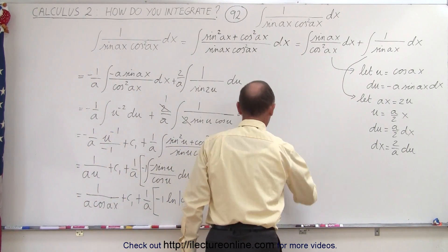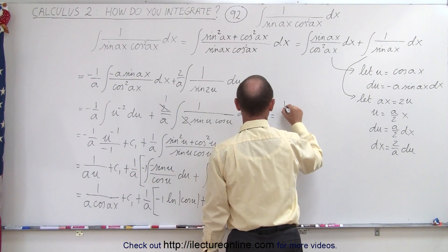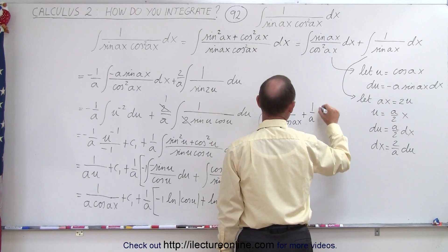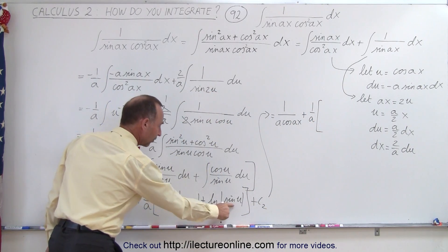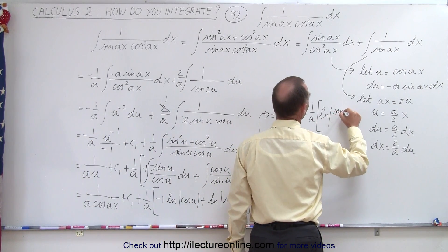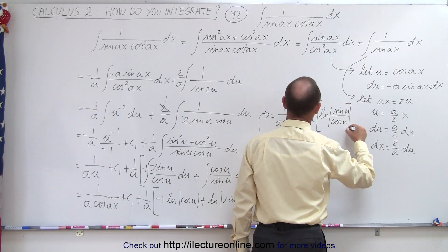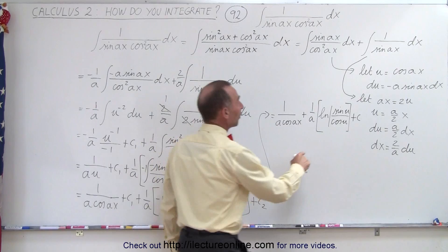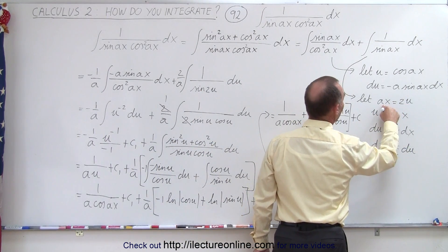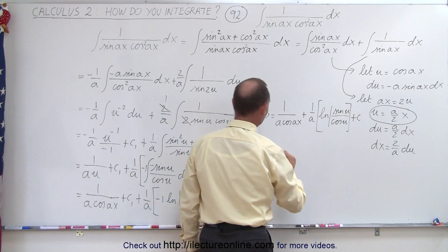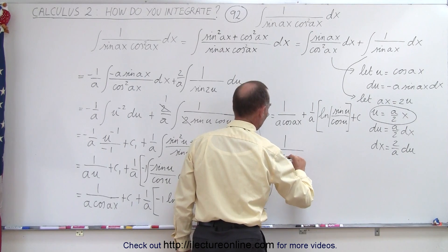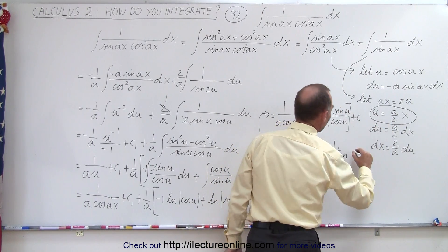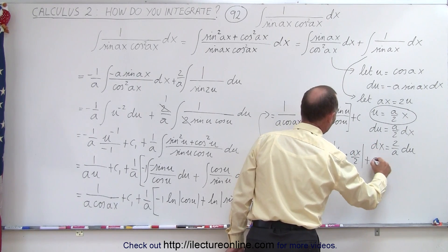Now we can go ahead and integrate. This simplifies to 1 over A times cosine of AX — where U for the first integral was cosine of AX — plus a constant of integration, plus 1 over A times negative 1 times the natural log of the cosine of U, plus the natural log of the sine of U, plus another constant of integration. Combining those constants, we can write this as 1 over A times cosine of AX, plus 1 over A times the natural log of the sine of U over the cosine of U — which is the natural log of the tangent of U. And since we let 2U equal AX, or U equals AX over 2, this becomes the final result.